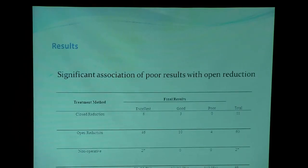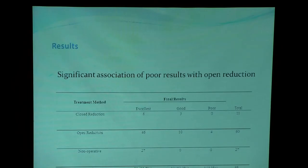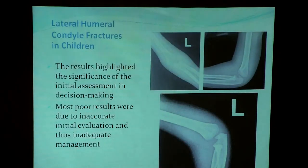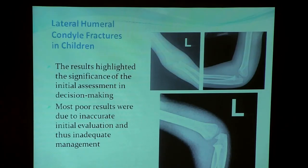Three of the four poor results were displaced according to authors' assessment. Three variables — the initial assessment, time from injury to surgery, and the casting period — were significantly associated with the final outcome by crude analysis. All poor results were treated by open reduction and internal fixation; there were no poor results with closed reduction or non-operative treatment. Our results highlighted the significance of accurate initial assessment, as most poor results were due to failure in initial assessment and inadequate treatment.